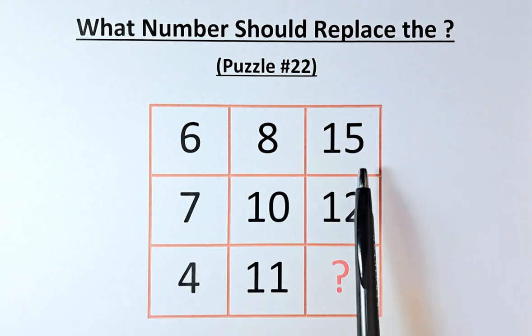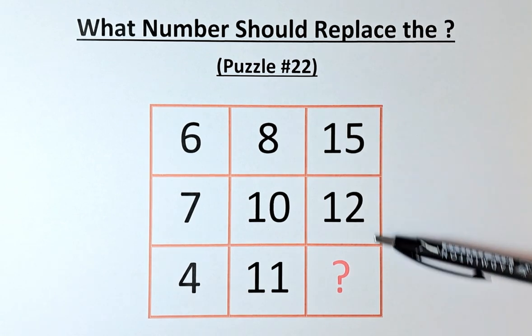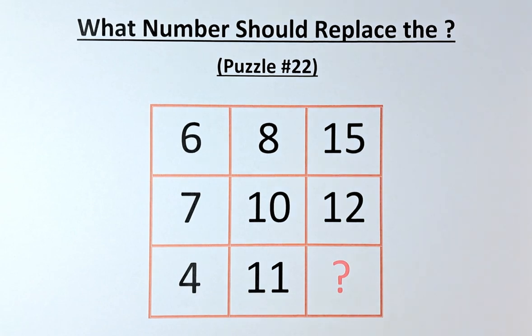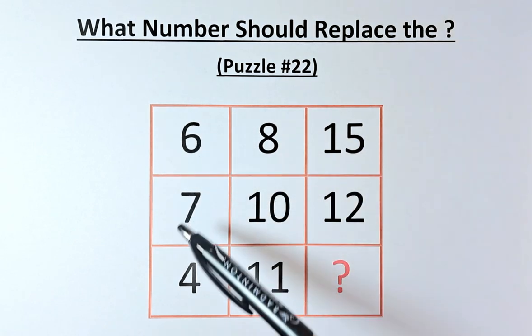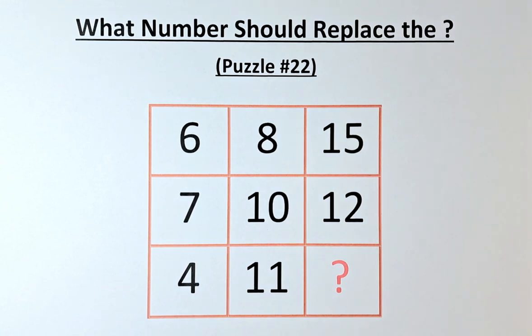Because the biggest numbers are all on the right-hand side. If you go in terms of columns - 6, 7, 4, 8, 10, 11, 15, 12, and the question mark - it doesn't make much sense. So in fact, it is working on the rows.